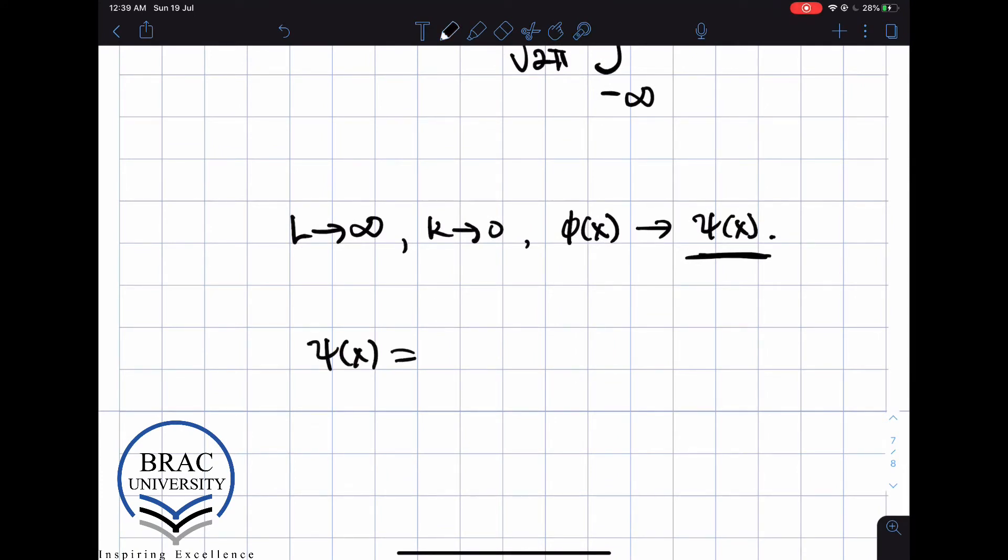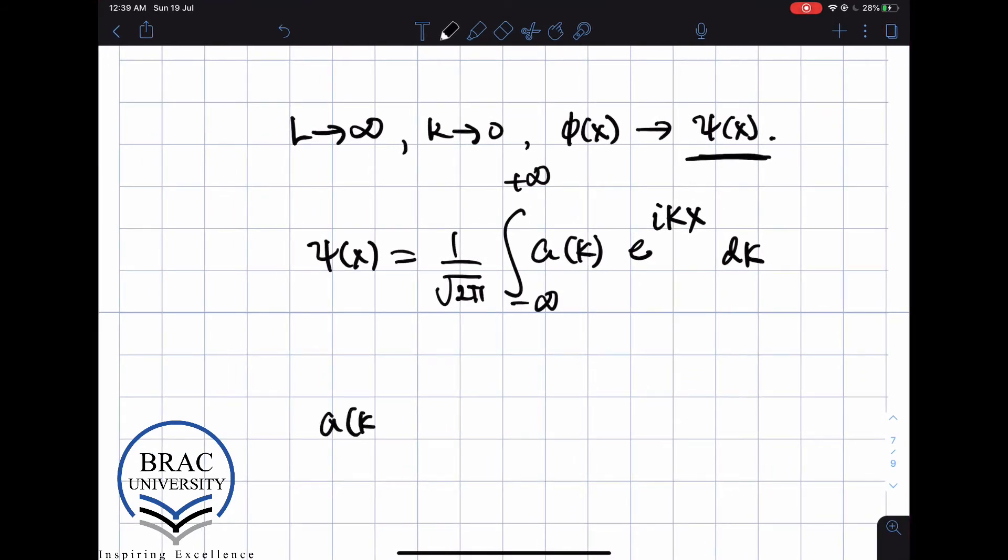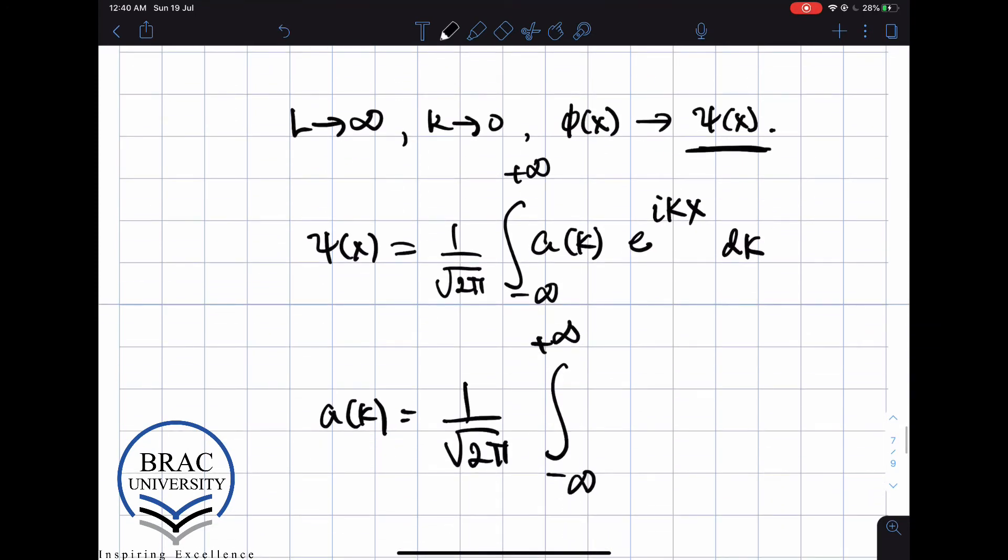So this expression that we derived is now an expression for ψ(x). So we can write that ψ(x) is given by a sum of exponentials with its k value, say the momentum value, to speak loosely, is given by this basis function. And these are the coefficients, and these coefficients, a(k), are given by 1/(2π) from minus infinity to plus infinity. And then we have ψ(x)e^(-ikx) dx. So these are the beautiful Fourier transforms of each other. So they're called Fourier transforms.